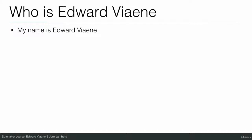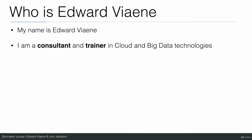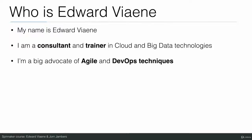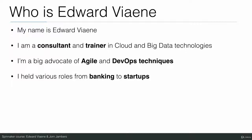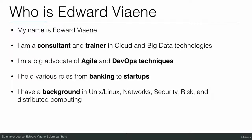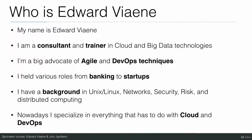My name is Edward Vianne and I am a consultant and trainer in cloud and big data technologies. I'm a big advocate of agile and DevOps techniques. I've held various roles from banking to startups. I have a background in Unix and Linux, networks, security, risk, and distributed computing. Nowadays, I specialize in everything that has to do with cloud and DevOps.